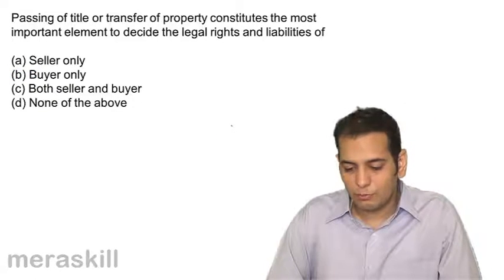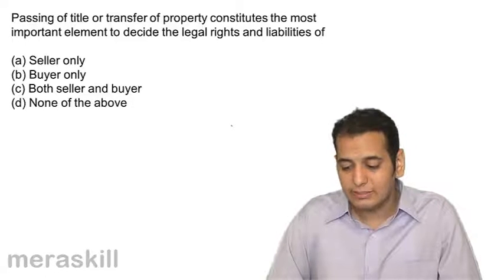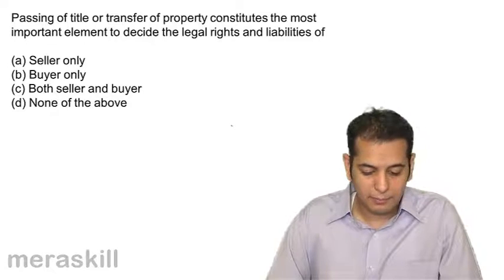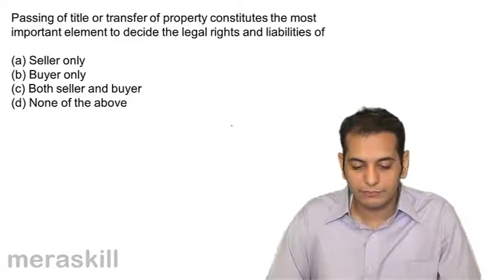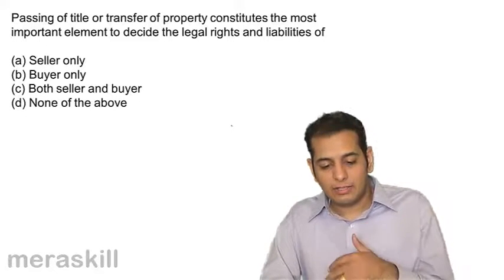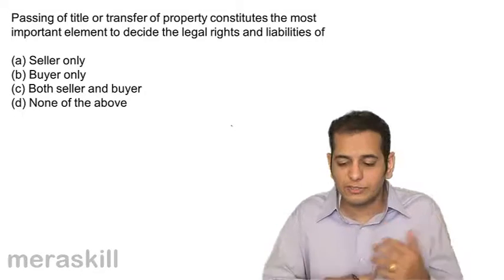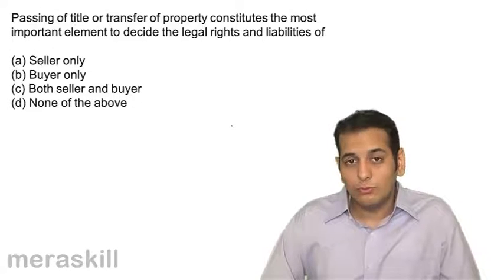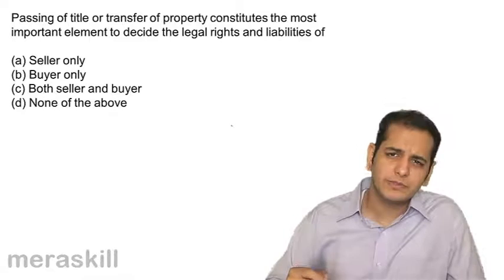Passing of title or transfer of property constitutes the most important element to decide the legal rights and liabilities of: A seller only, B buyer only, C both seller and buyer, D none of the above. Obviously the answer is both seller and buyer.